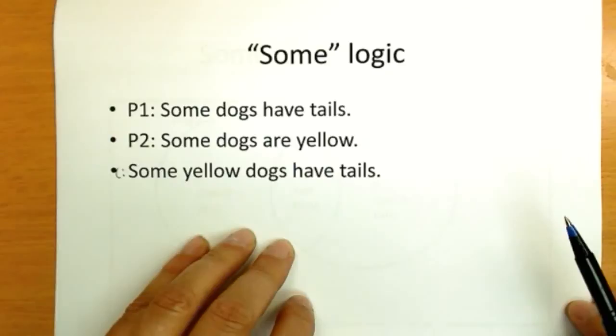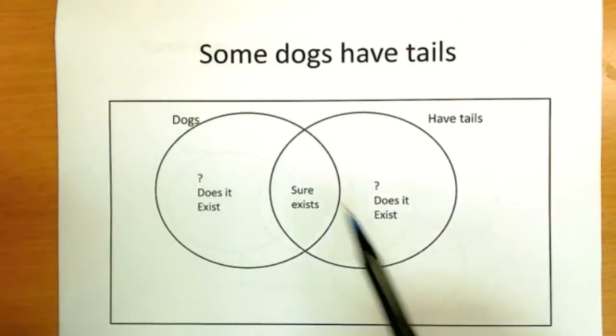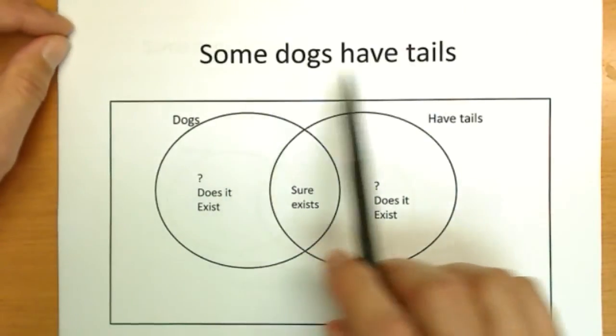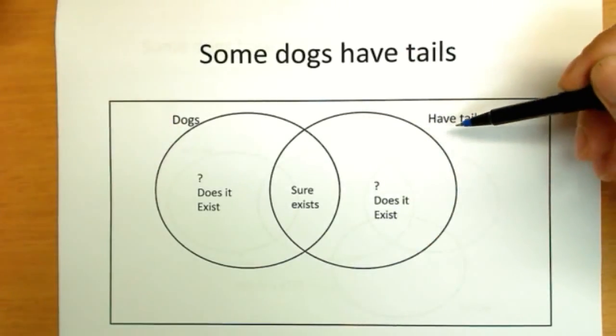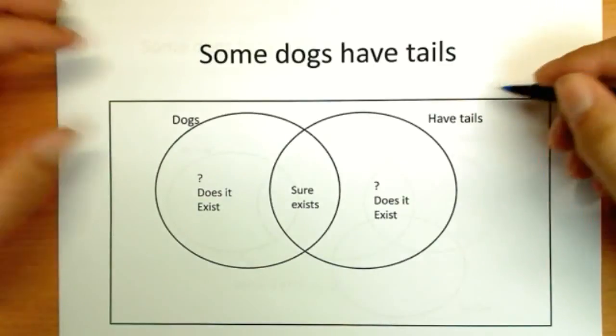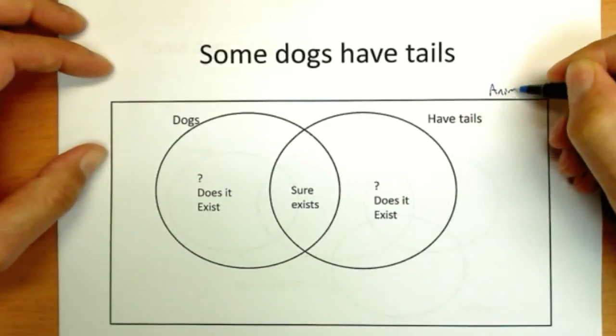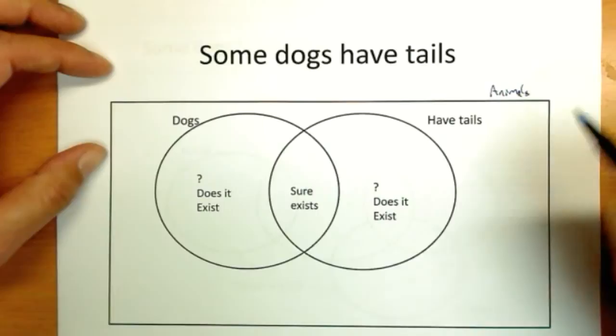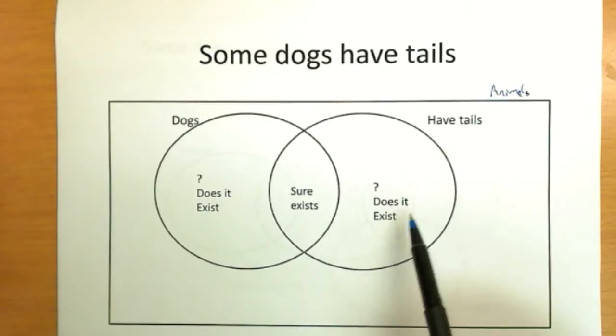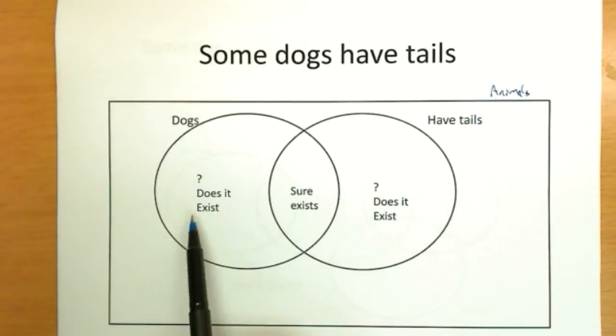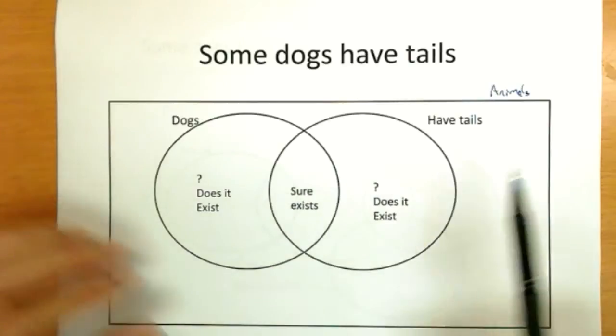Assuming you've actually solved this on your own, now we're going to discuss it. First for a moment, let's draw a Venn diagram just for some dogs have tails. So I have a circle for dogs and a circle for animals that have tails. In this case, my universe might be all animals. And what we are asserting when we know some dogs have tails is this center part must exist. We're sure it exists. We're not so sure about this. Whether or not there are other animals with tails other than dogs, we don't know. And whether or not there are dogs over here that don't have tails, we don't know. We just know for sure there are some dogs that have tails.